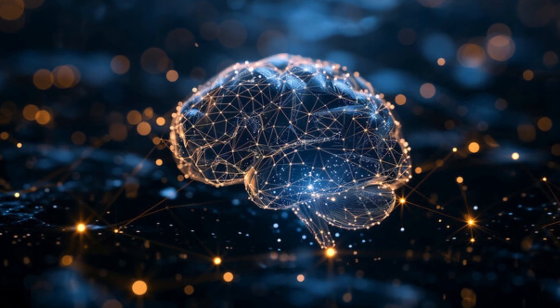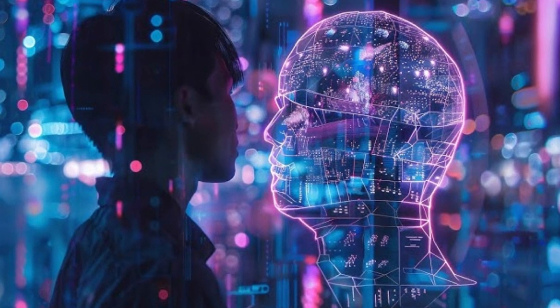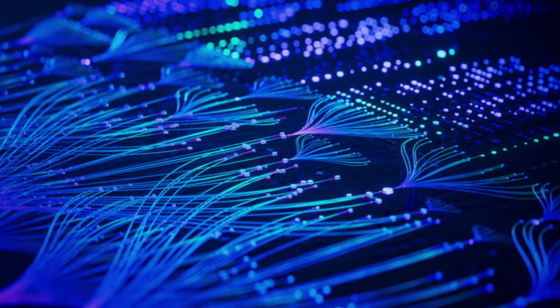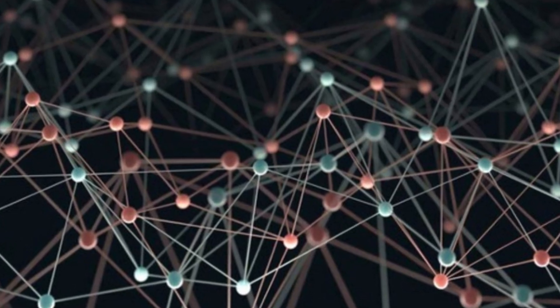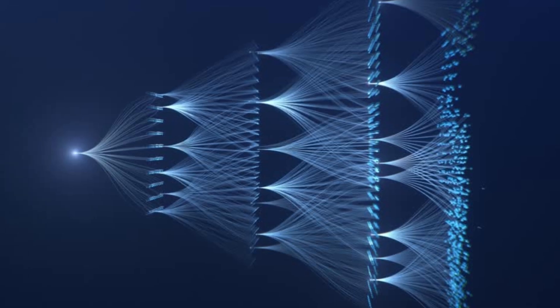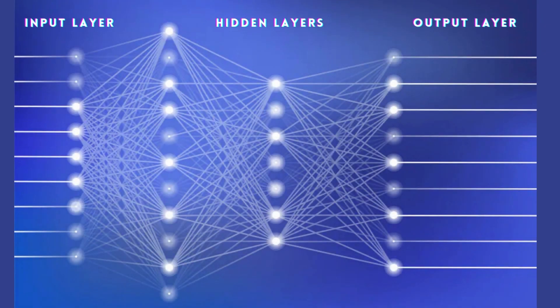A neural network is structured like the human brain and consists of artificial neurons, also known as nodes. It consists of layers of interconnected nodes or neurons, where each connection has a weight that is adjusted during training. These nodes are stacked next to each other in three layers: the input layer, the hidden layers, and the output layer.